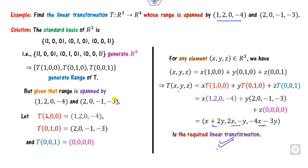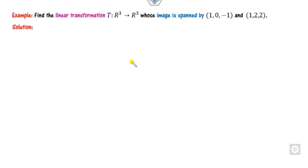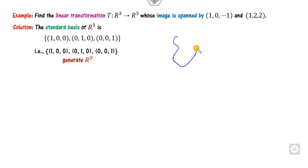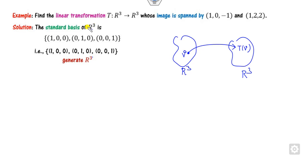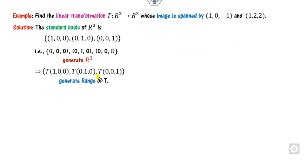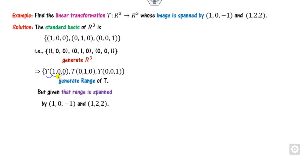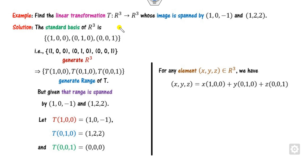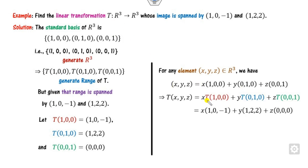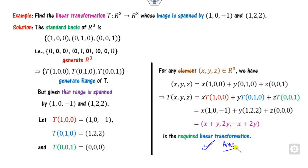You can verify: substituting (1,0,0) gives the first spanning vector, and (0,1,0) gives the second. Now look at one more example of the same type. Again the domain is R3, so take the standard basis of R3. Here the mapping is from R3 to R3, with the range spanned by two given vectors. Assign the basis images accordingly, set the third to 0, then write any element as a linear combination, apply T, substitute, and open the brackets to get the required transformation.